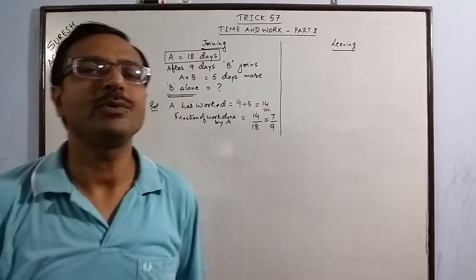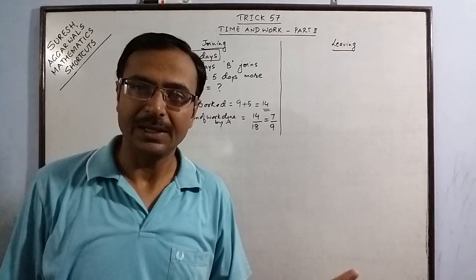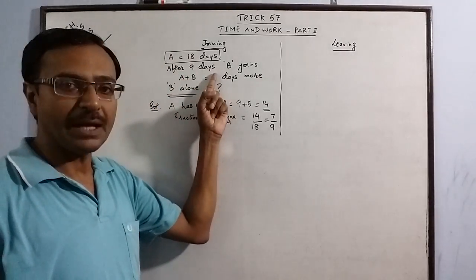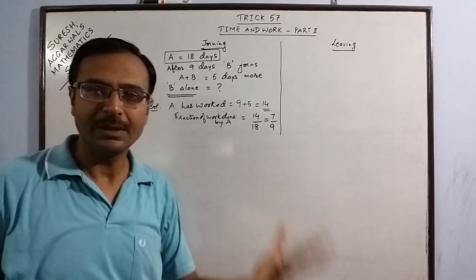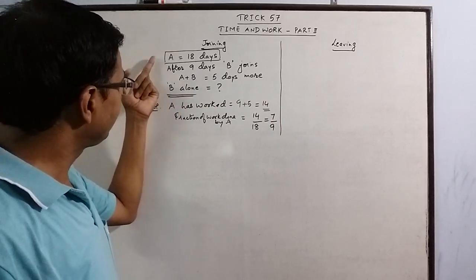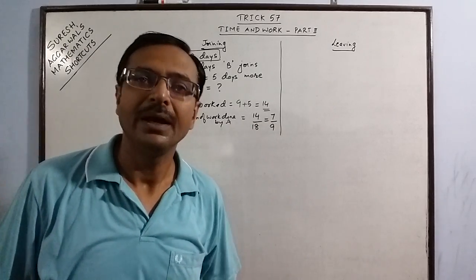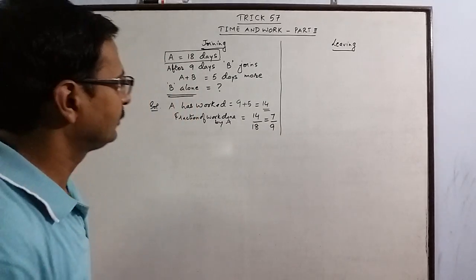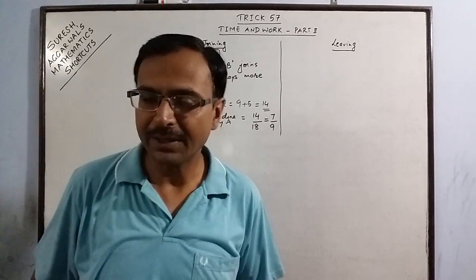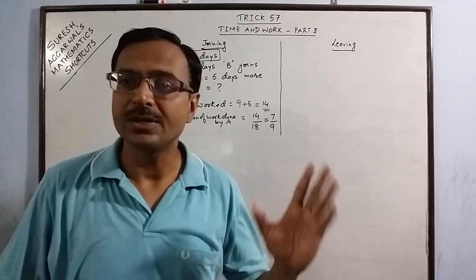This is the first step: calculate the fraction of work done by A. A worked 9 days alone and 5 days together with B — so 14 days total. Since he would take 18 days alone, he has done 14/18 = 7/9 of the work. Now, what is the remaining work? The total amount of work is always 1 — remember that concept.